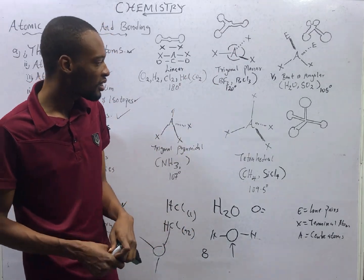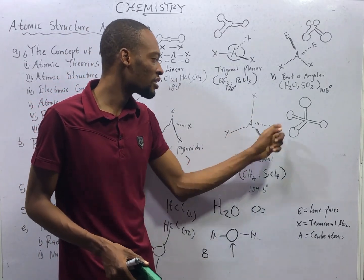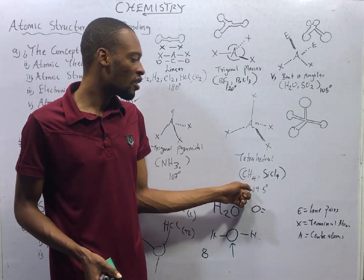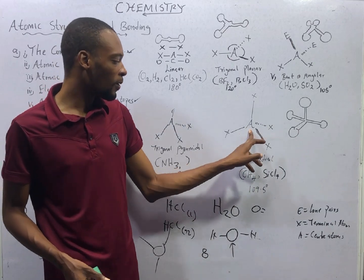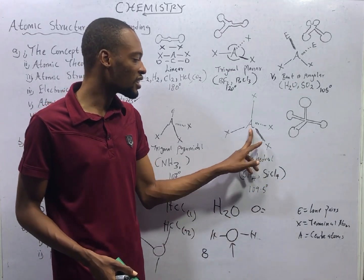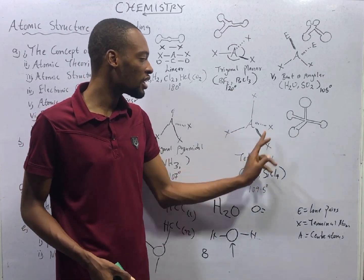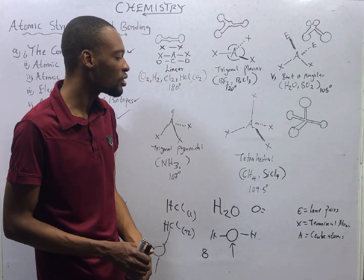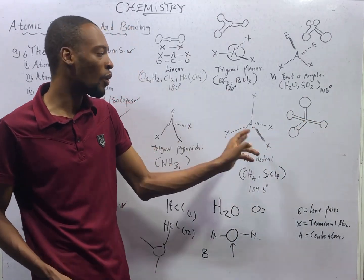Tetrahedral has one central atom and four terminal atoms around it. If you look at CH4 (methane) or silicon tetrachloride SiCl4, you will see that the carbon is in the centre and the four hydrogens are around it in methane. For silicon tetrachloride, silicon is in the centre and four chlorines are around it — one central atom, four terminal atoms. The bond angle in a tetrahedral molecule is 109.5 degrees.